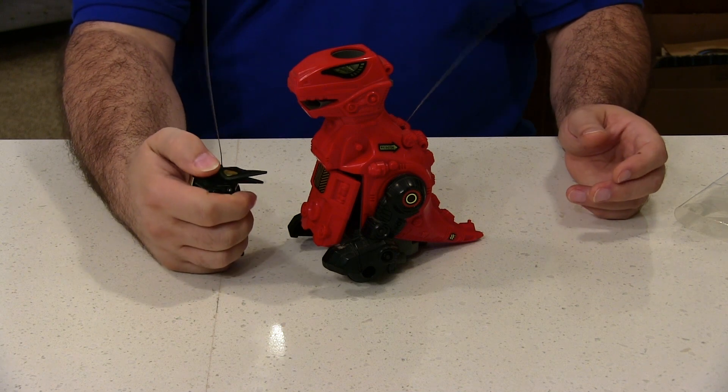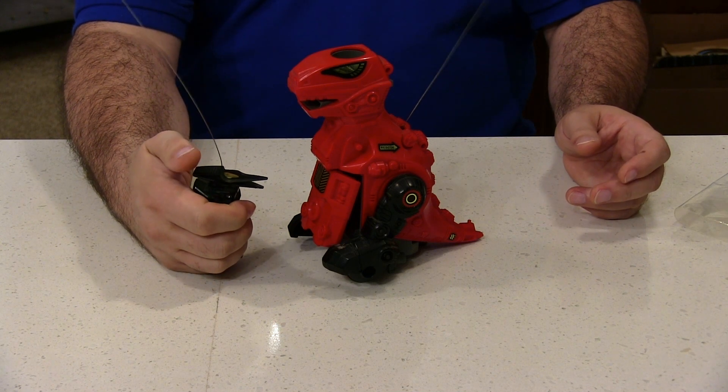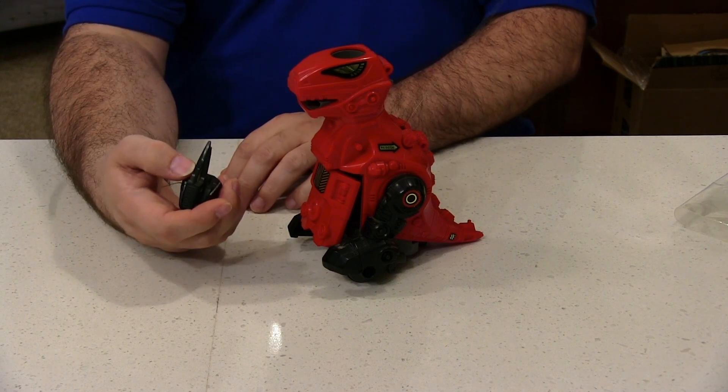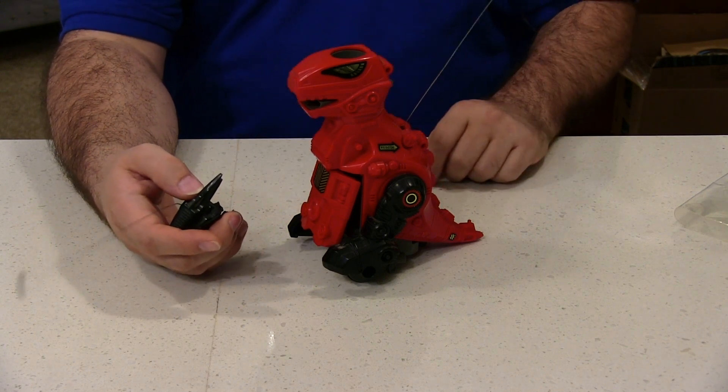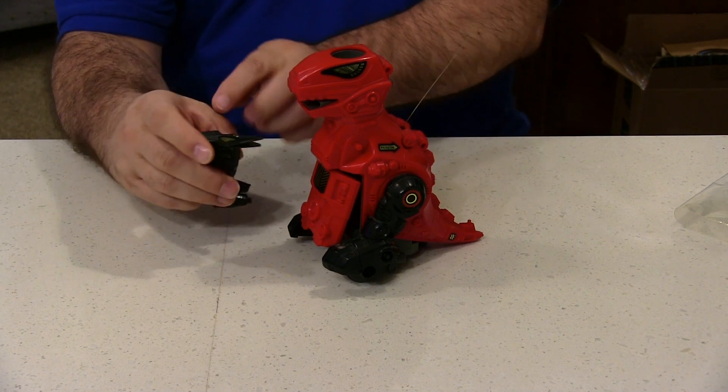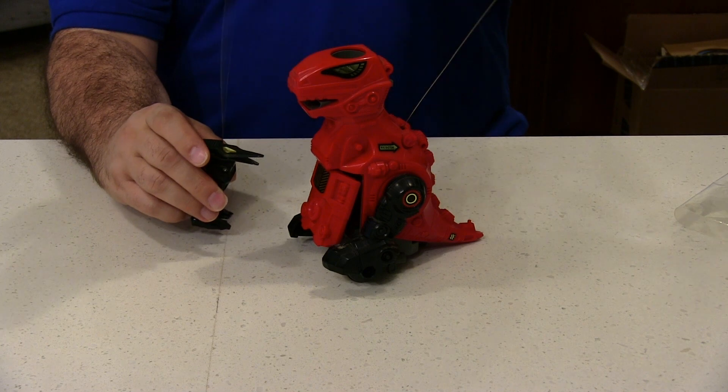It's literally a clicker. When you click it inside, it makes a tiny little spark that transmits off of this antenna here and controls the robot.